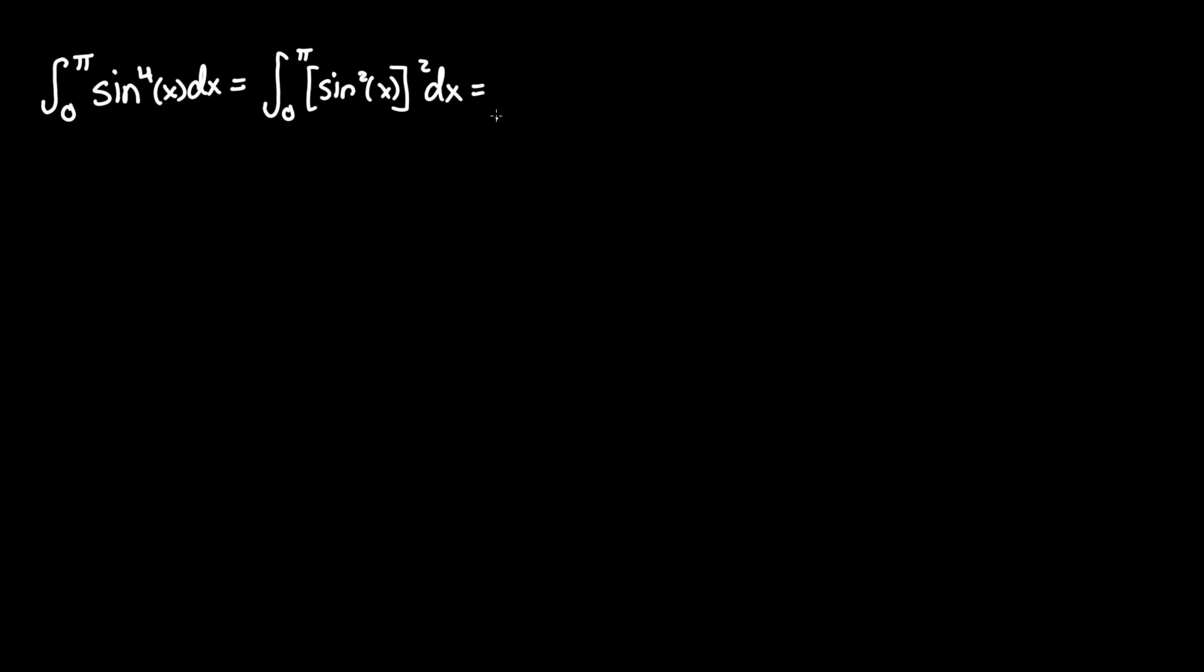And by using a double angle identity, we can reduce this even further so that we can actually integrate this function, because we still can't do it directly. As you know, it's one half times one minus cosine of 2x. Just another property you got to remember. Closing the third level of brackets, you have to make sure to square this entire thing, since what's inside here is equivalent to sine squared of x. However, we can't just ignore this exponent that we had from before.